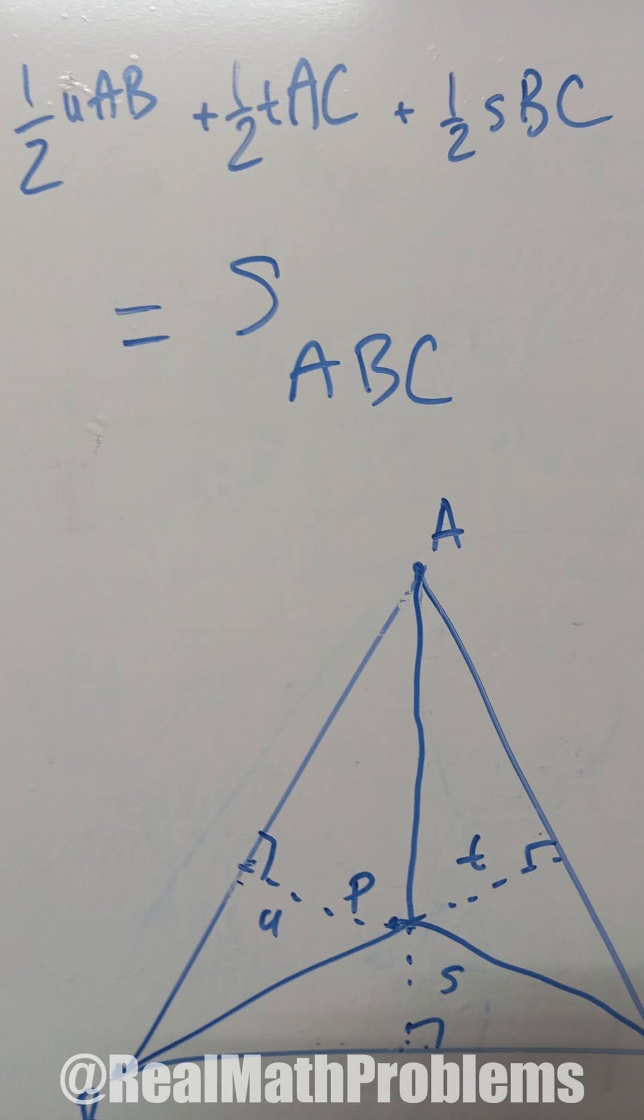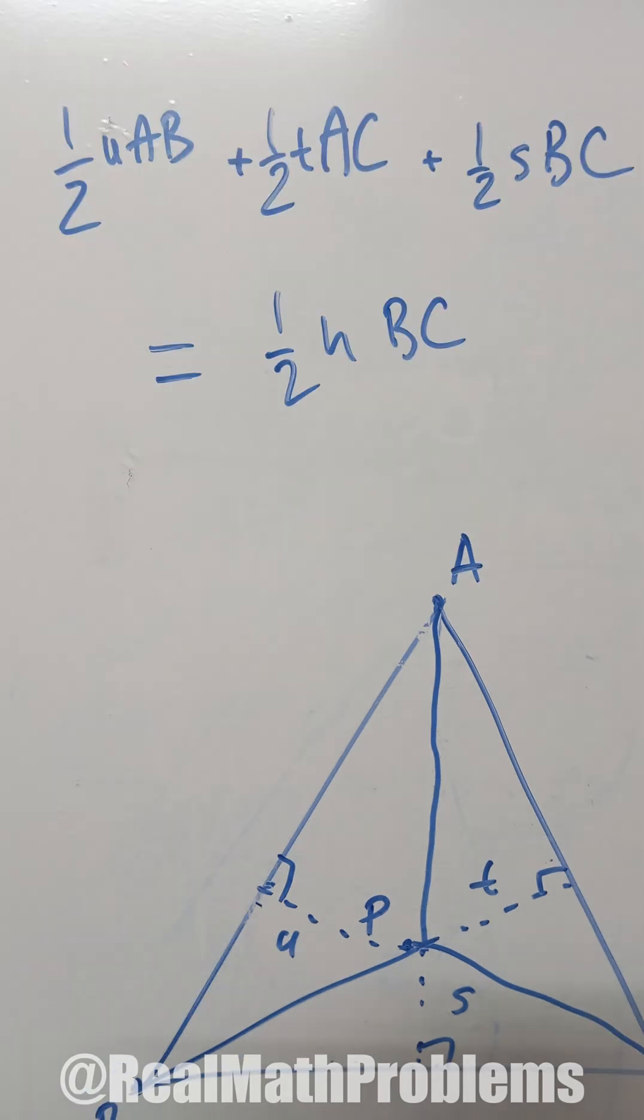One-half times U times AB plus one-half times T times AC plus one-half times S times BC equals one-half times H times BC.